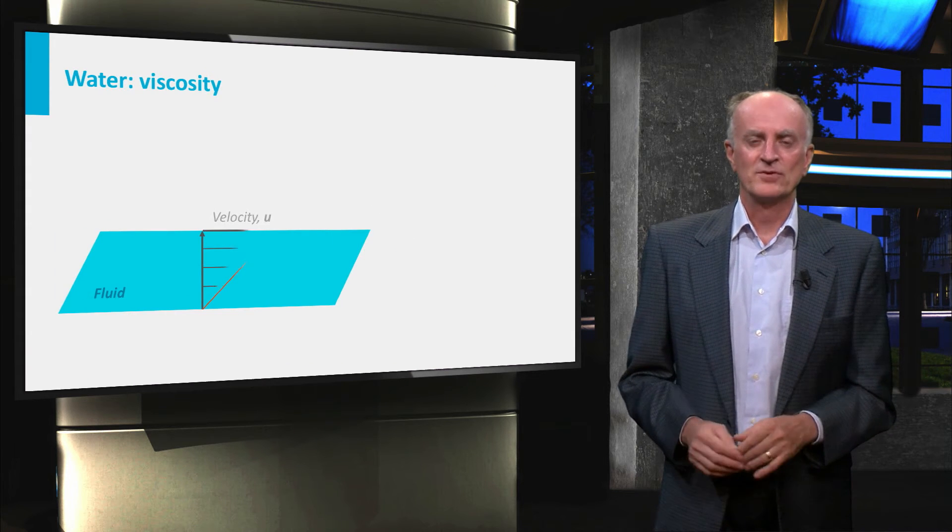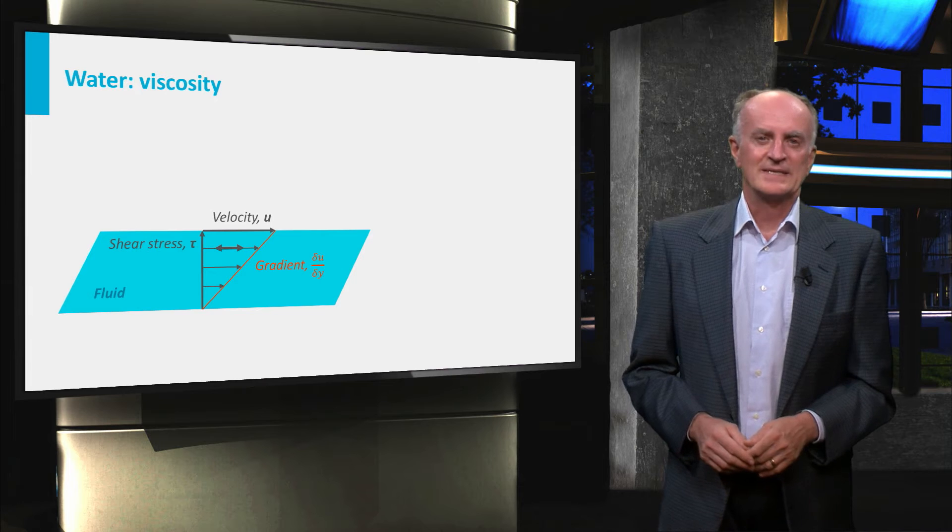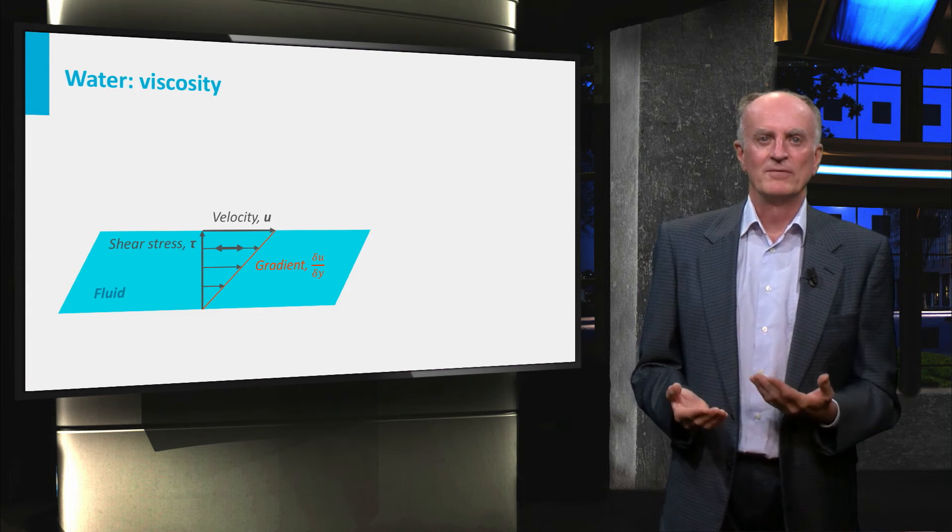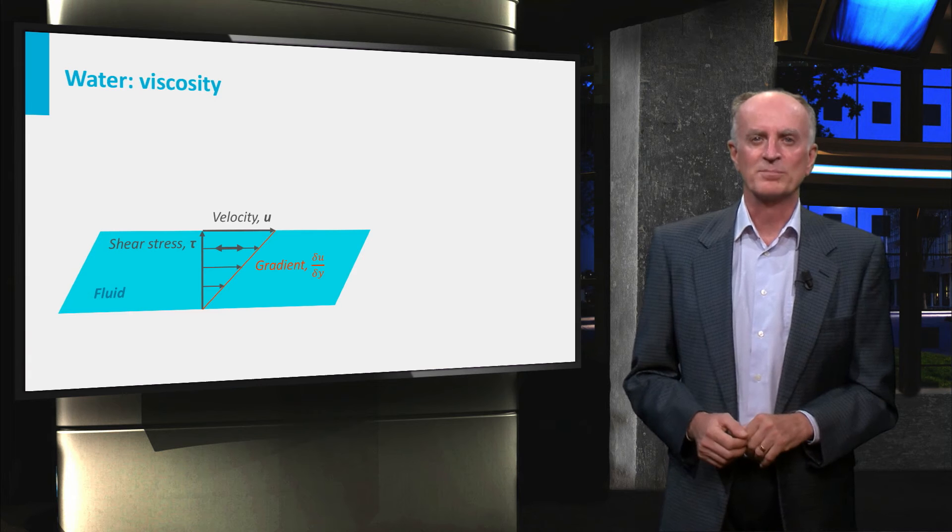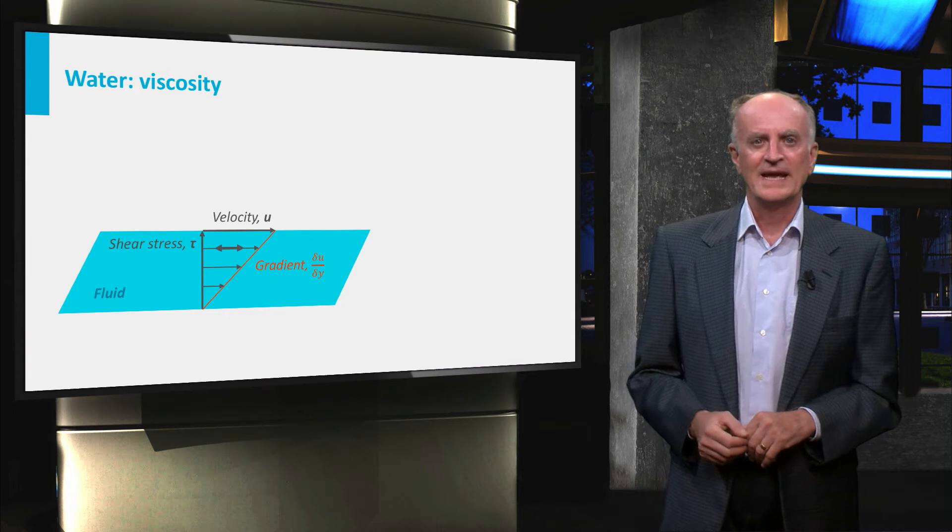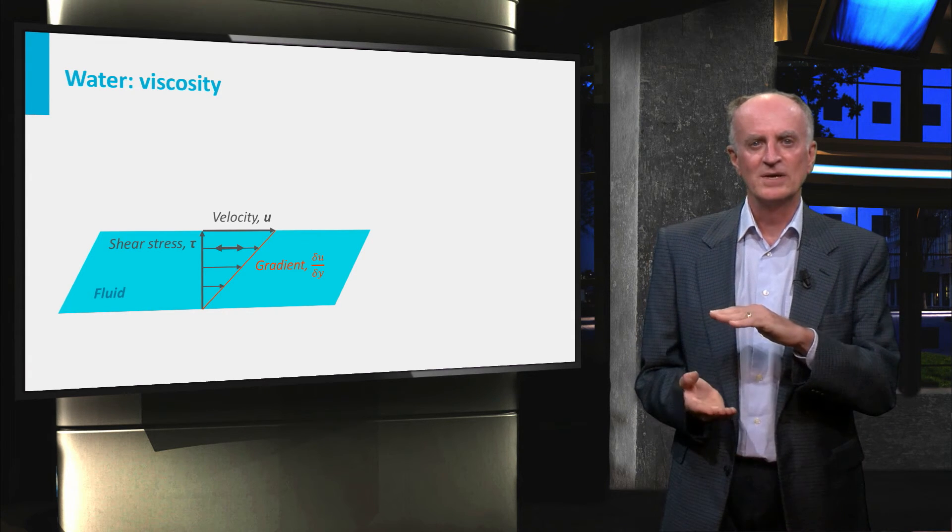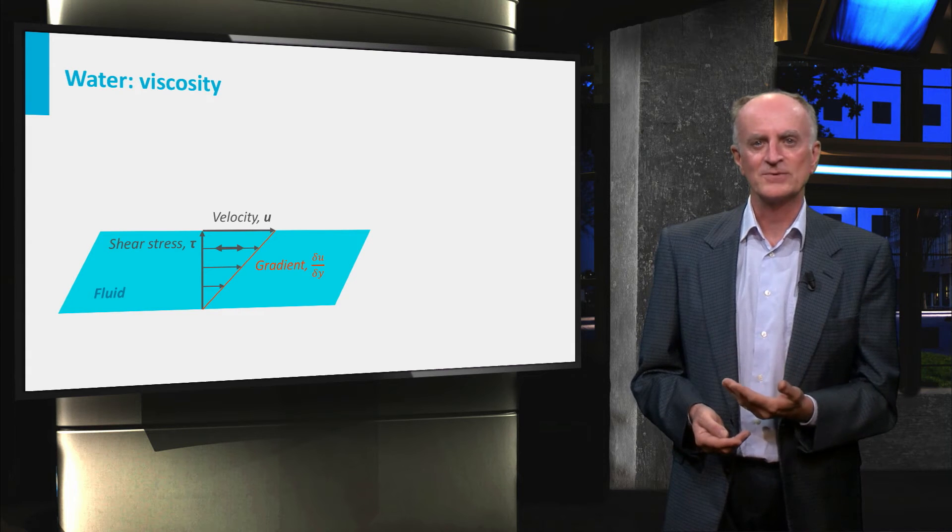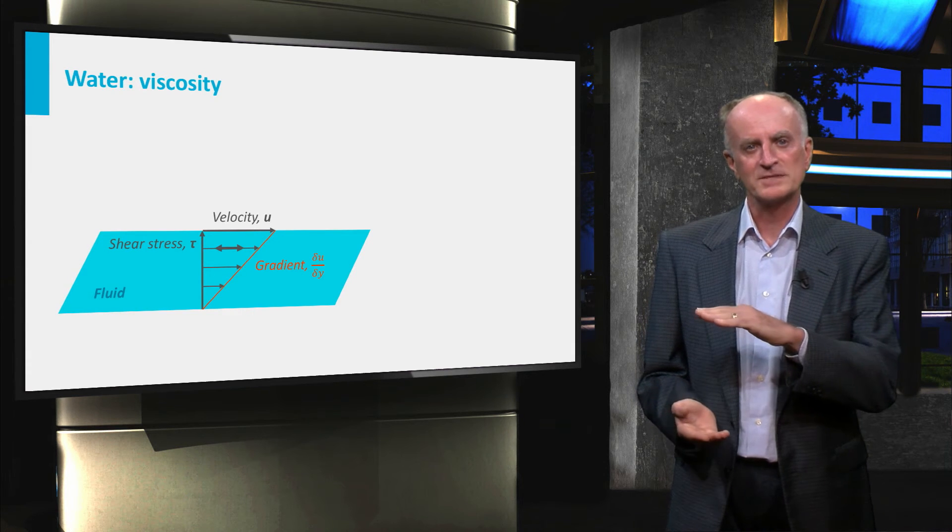Another important property of water is viscosity, which is a kind of internal friction of the fluid resisting its flow. In a more precise manner, it can be defined as the parameter μ in the equation, which describes the force needed to keep the upper plate moving with respect to the lower one.